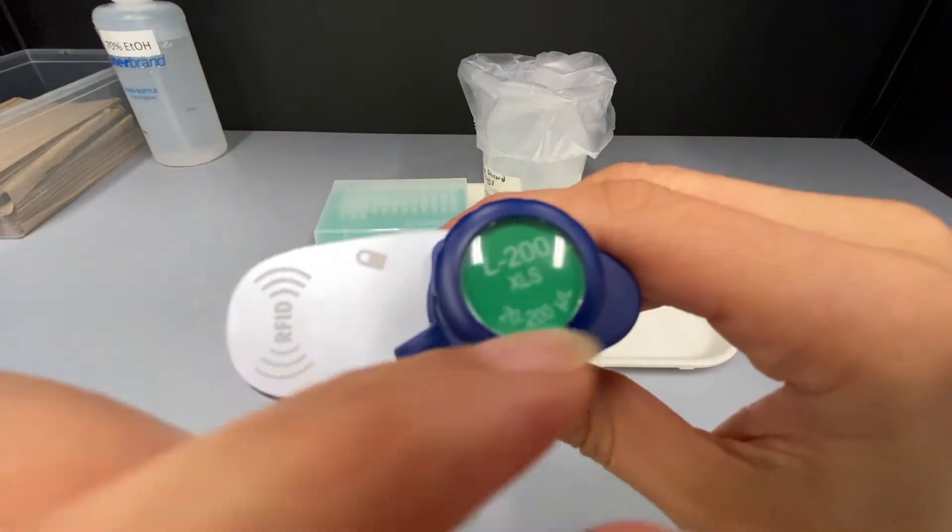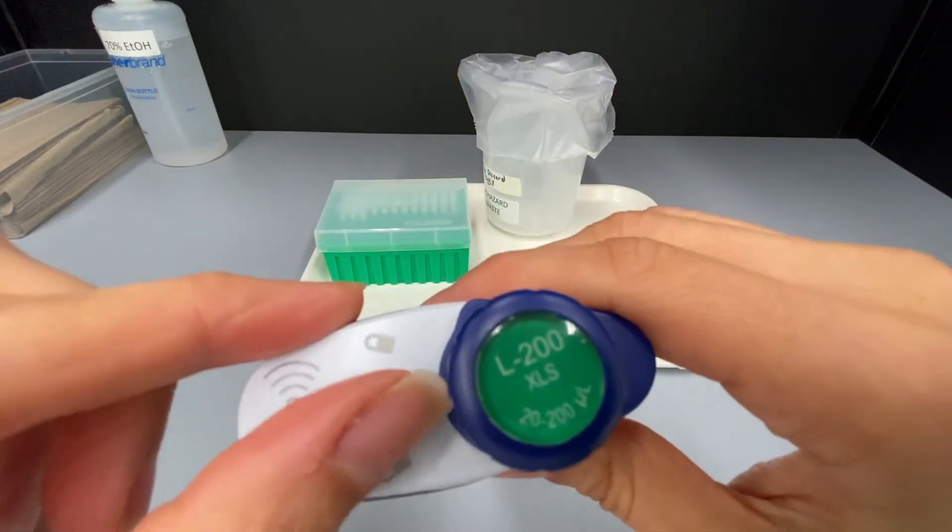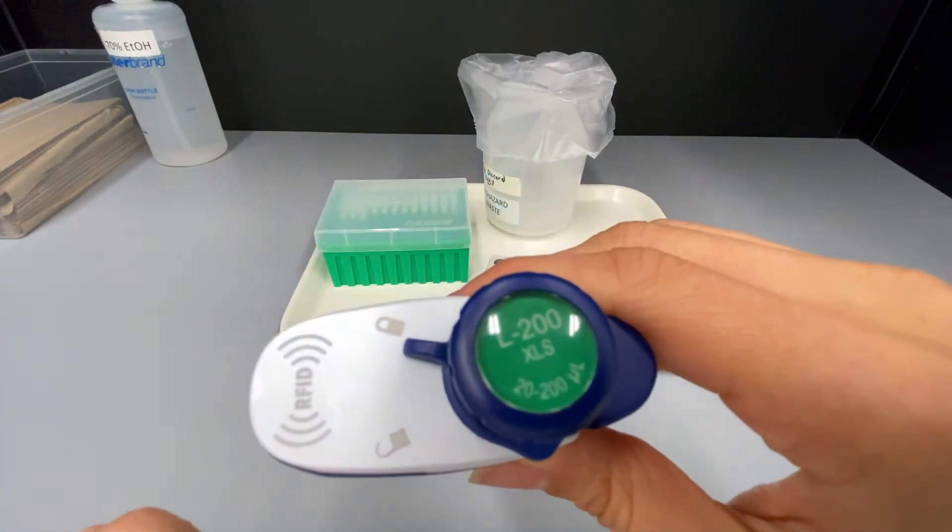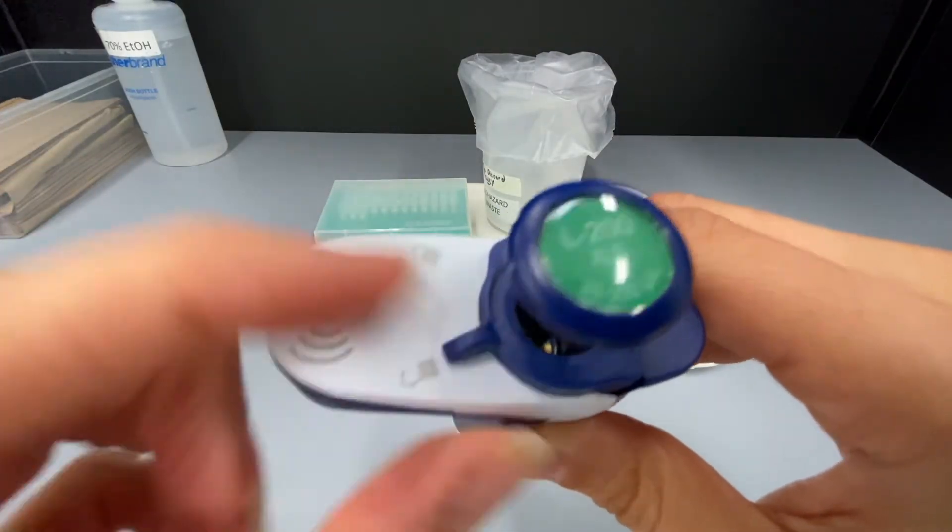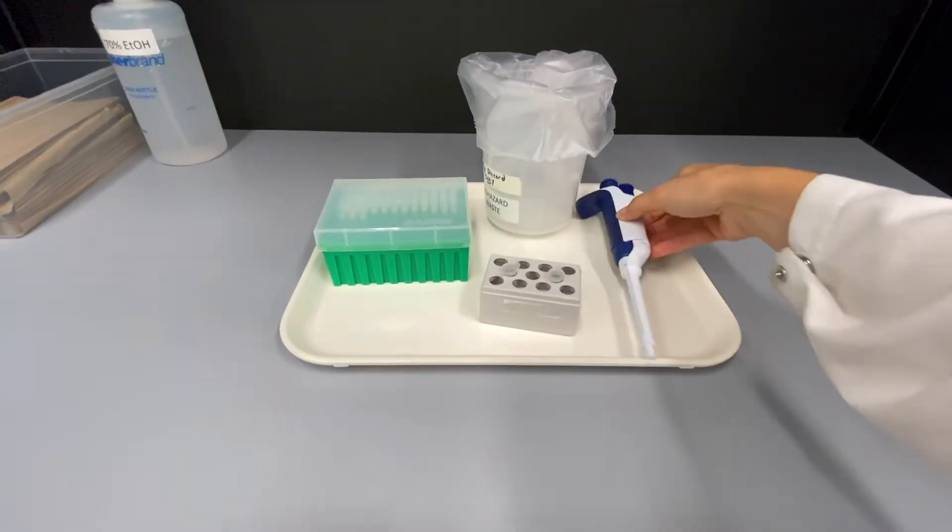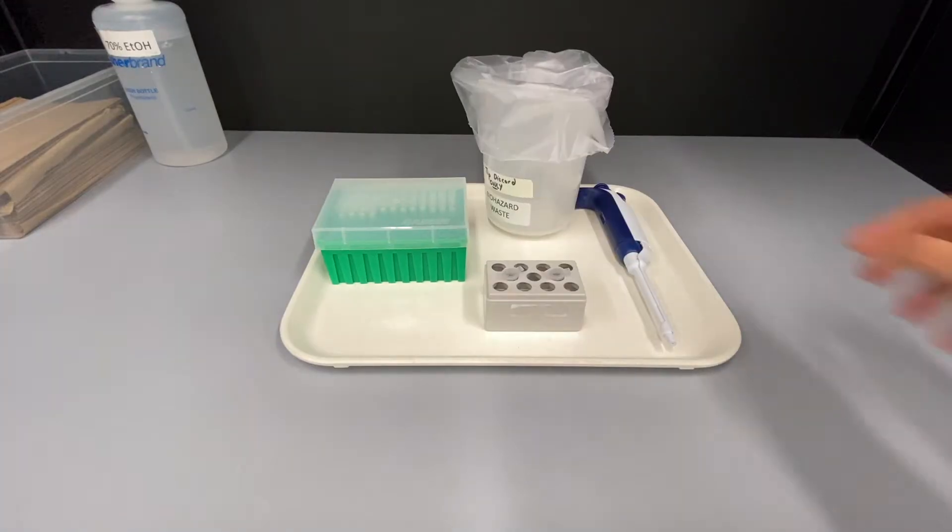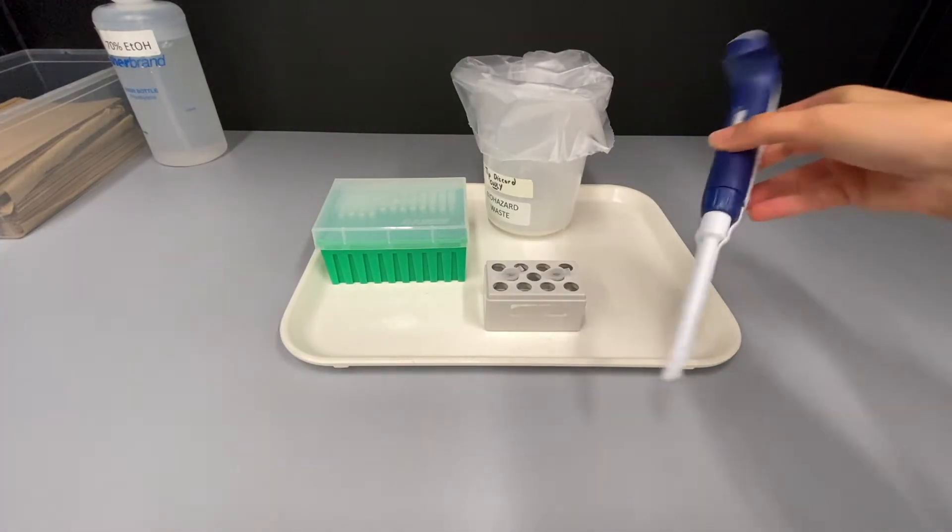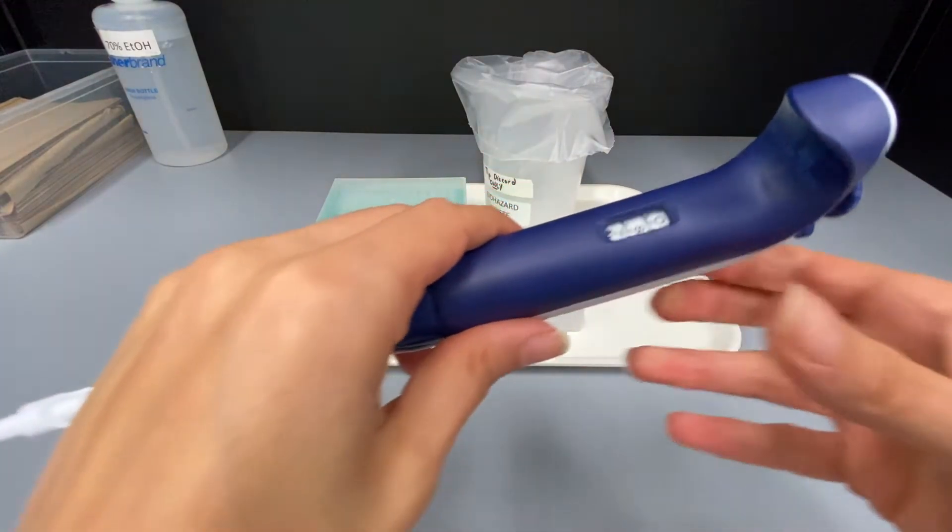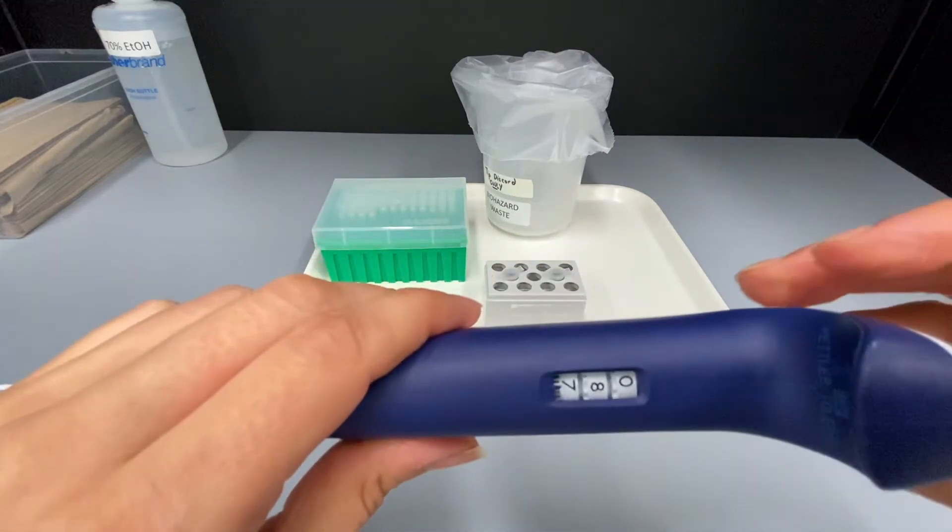Depending on the model of pipette in the lab, you may or may not have a locking mechanism like this one. If you have a locking mechanism, you must make sure it is in the unlocked position before adjusting the volume. The volume indicator tells you how much volume the pipette is currently set to pick up. Right now it is at 0, 8, 7, meaning it is set to pick up 87 microliters.